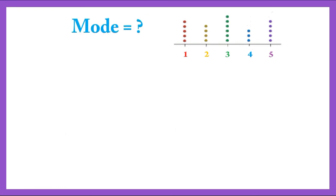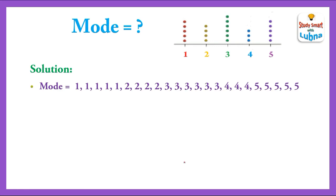Now, how to find the mode using the Dot Plot? Mode is the most frequent or most repeated value in the given data. We write the numbers: 1 five times, 2 four times, 3 six times, 4 three times, and 5 five times. The most repeated value here is 3. So our mode is 3.